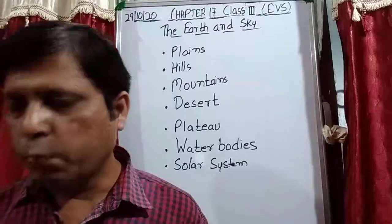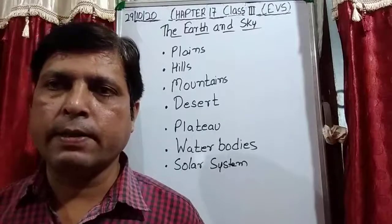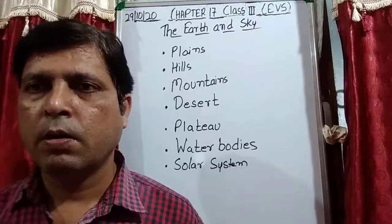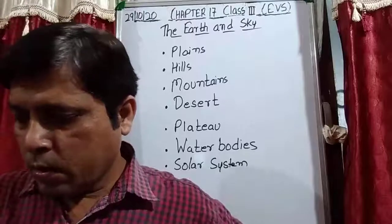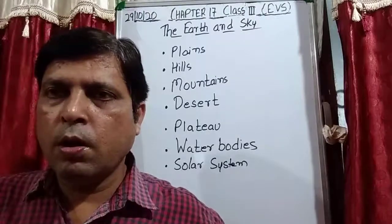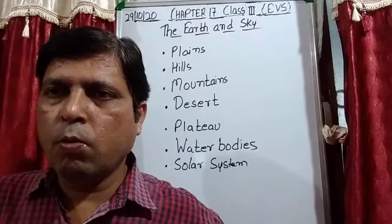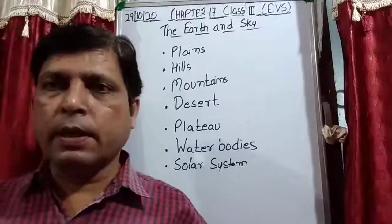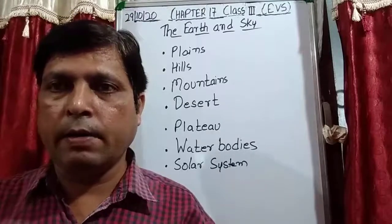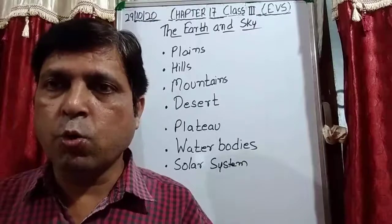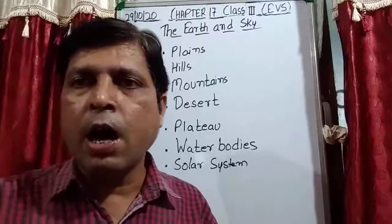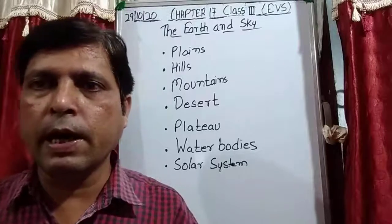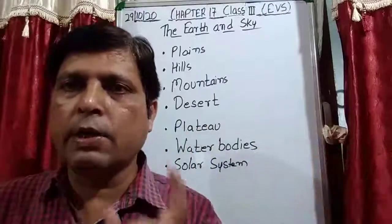Then we discussed the properties of planets. Planets do not have their own light and heat. So from where do they get light and heat? Planets get their light and heat from the Sun, because all planets are taking a round of the Sun. This movement of a planet around the Sun is known as revolution.